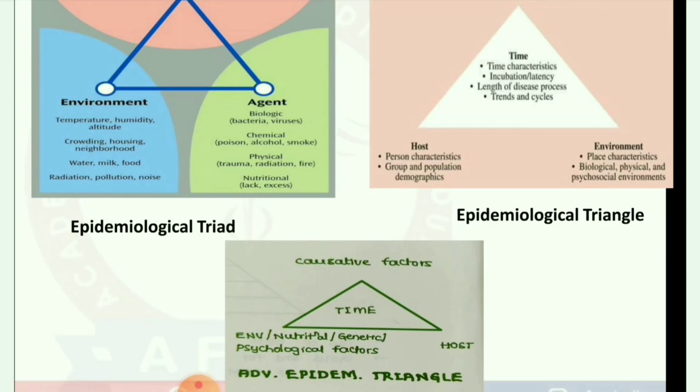Advanced Epidemiological Triangle includes causative factors, host, environment, nutritional factors, genetic factors, psychological factors, and time.